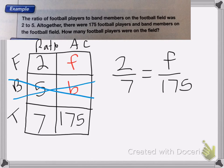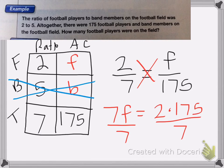So just like you do with most proportions, we're going to cross multiply to find the answer. So I end up with 7f equals 2 times 175. So to get rid of the 7, I'm going to divide both sides by 7. The 7's cancel and I'm left with 2 times 175 divided by 7.